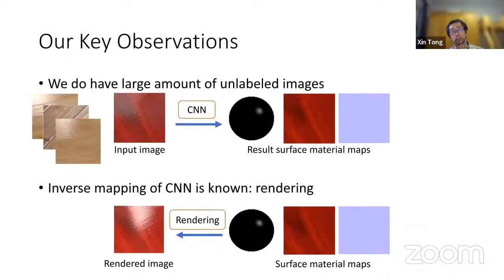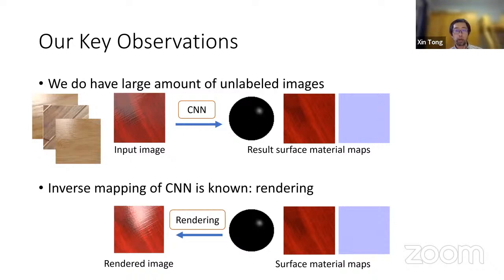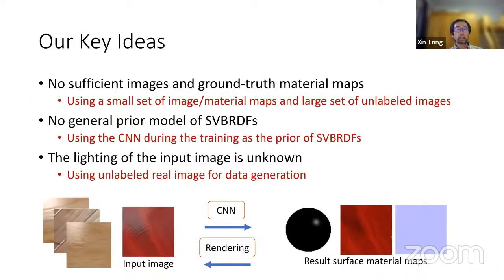To tackle these challenges, our key observations are: although labeled data — meaning images with ground truth material maps — is difficult to collect, it is easy to obtain a large number of unlabeled images from internet search or previously released datasets such as the OpenSurfaces dataset. Moreover, for this single-image material modeling problem, we have a well-known inverse mapping — rendering. Our task is getting surface reflectance maps from one single image, but given the material maps, we can render a very realistic image back.